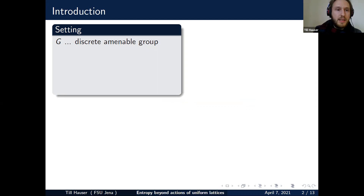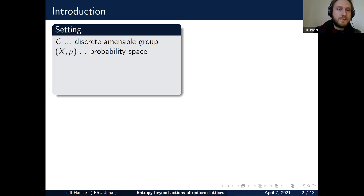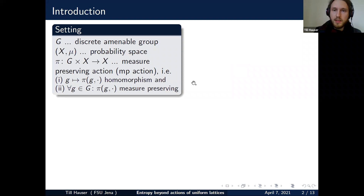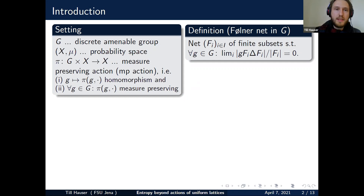So groups of measure preserving maps, and in this case all of them will be essentially invertible. Amenability here basically means that whenever I act continuously on a compact Hausdorff space, then I will have an invariant regular Borel probability measure. In this measure theoretical setting, I'm going to start with some probability space and one of these amenable groups with the discrete topology. I'm going to consider a measure preserving action. And for averaging we use so-called Følner nets.